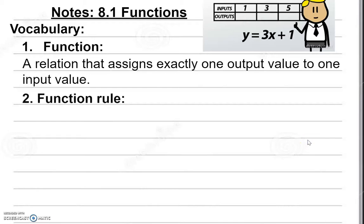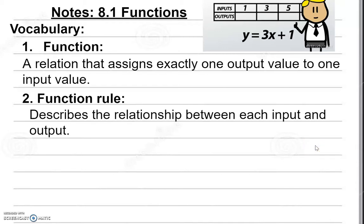The next vocabulary term is our function rule. Think about the function rule as the formula — the information that is given to you — and then you substitute one of the variables in order to find out what the other variable is. In other words, it describes the relationship between each input and output.